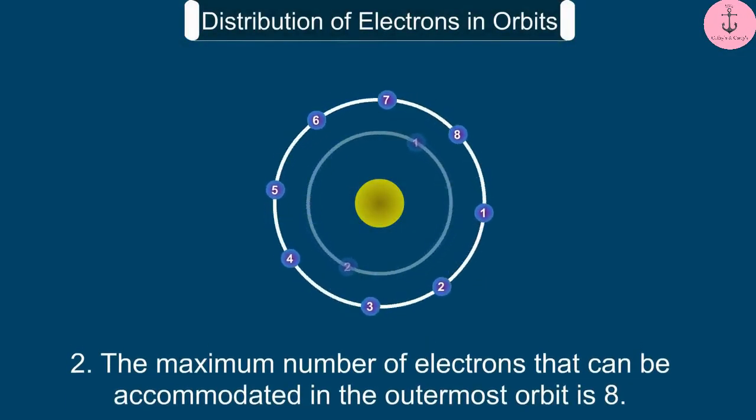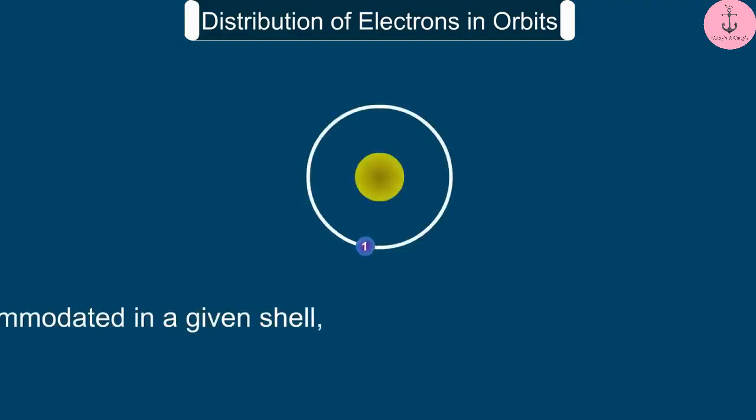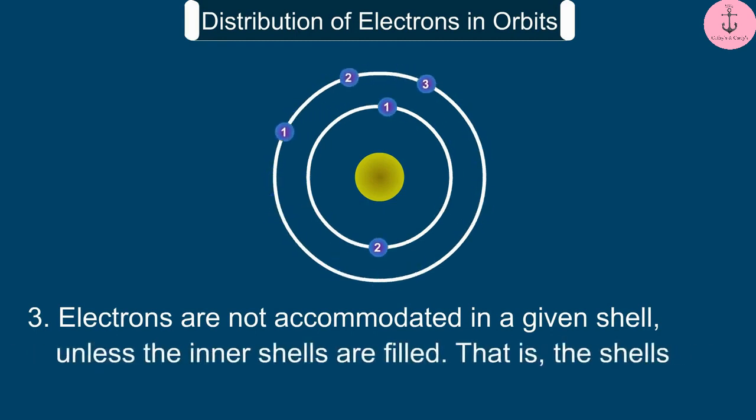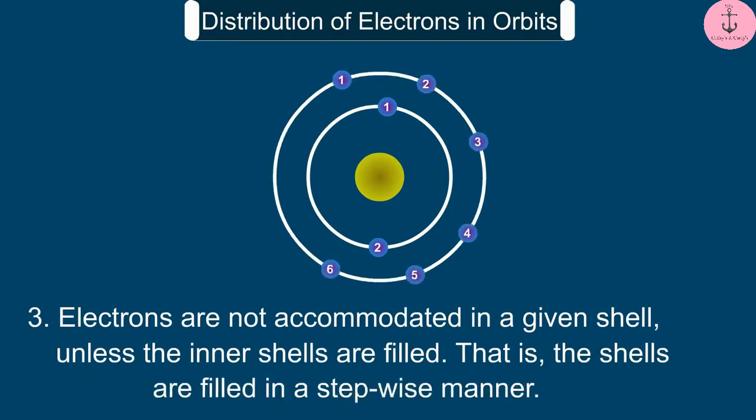The maximum number of electrons that can be accommodated in the outermost orbit is 8. Electrons are not accommodated in a given shell unless the inner shells are filled. That is, the shells are filled in a stepwise manner.